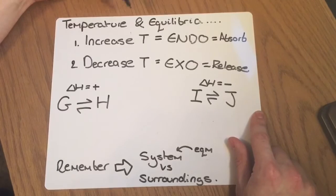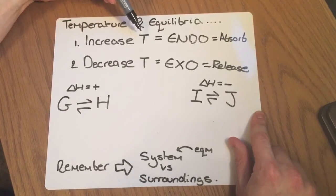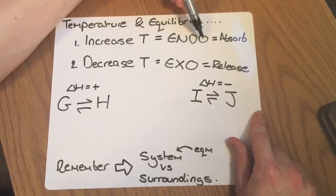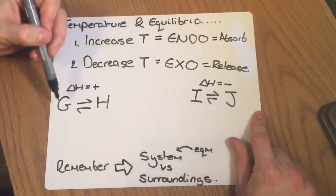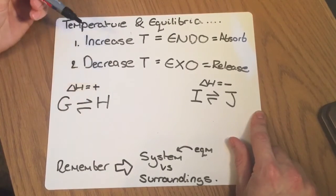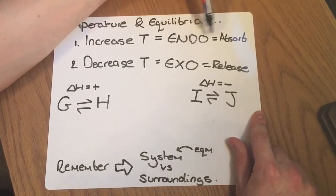So I'll just sum that up once more. If you increase the temperature, the equilibrium will shift in the endothermic direction every single time, but that could be to the left or the right. You're going to have to have a look in the exam. And the reason it does this is to absorb the heat.